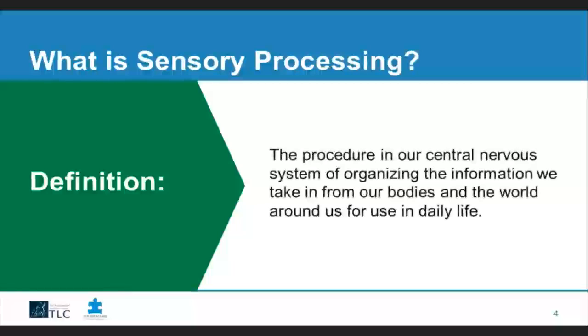Moving on from the characteristics of autism — what is sensory processing? Some of you may have also heard the term sensory integration. The definition is: the procedure in our central nervous system of organizing the information we take in from our bodies and the world around us for use in daily life. Sensory processing is an unconscious process of the brain. It occurs without us even thinking about it, just like breathing. It organizes information detected by our senses and allows us to respond to situations in a purposeful manner, forming the underlying foundation for academic learning and social interactions.